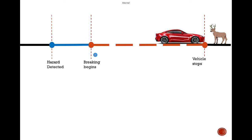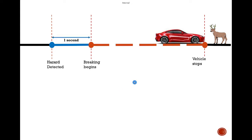The hazard was detected here whereas the braking begins from here. Why? Because the human brain needs some time to decide on the course of action. In this case, the course of action was braking. This time is known as thinking time, and for a normal human brain this is 1 second. In that 1 second, your car has already moved forward a distance, and this distance is known as the reaction distance.